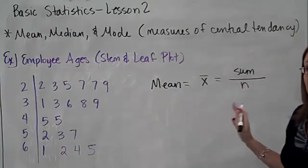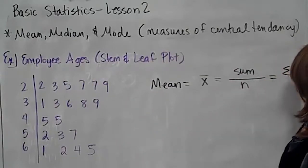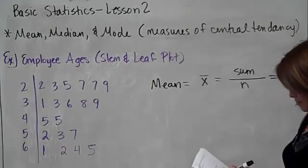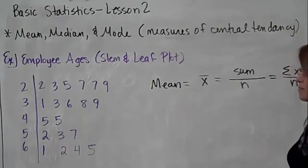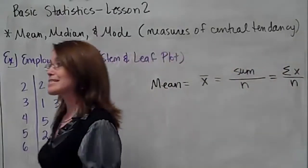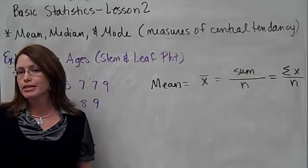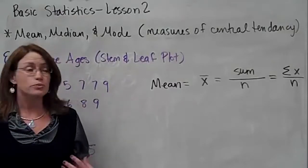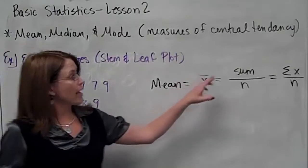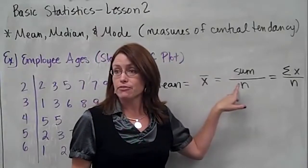In fancy math symbols it looks like: sum of x divided by n. Don't get bogged down in the symbols — just realize you're going to add up all your values and divide by how many you have.